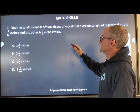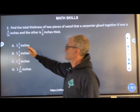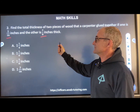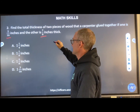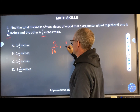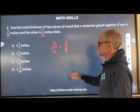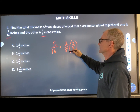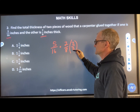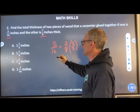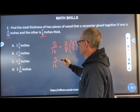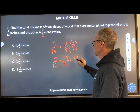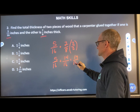Problem number two: find the total thickness of two pieces of wood if one is 5/16 and one is 7/8. Before I even start the problem, I recognize I'm adding fractions, so I need a common denominator. I have 5/16 plus 7/8. That common denominator is going to be 16. I have to multiply 7/8 by two over two — which equals one, so I don't affect the value. That gives me a denominator of 16. Now I have 5/16 plus 14/16, which gives me 19/16.